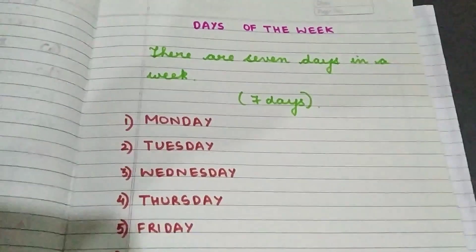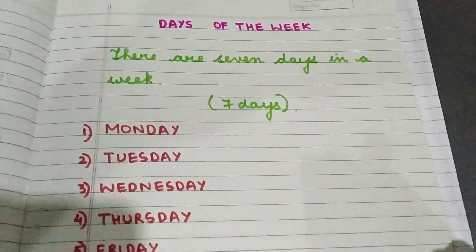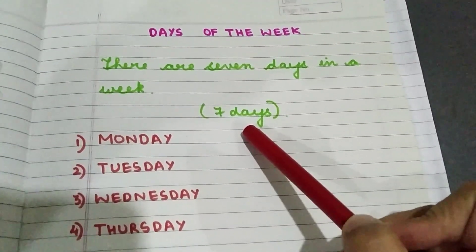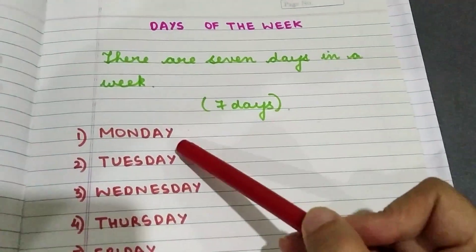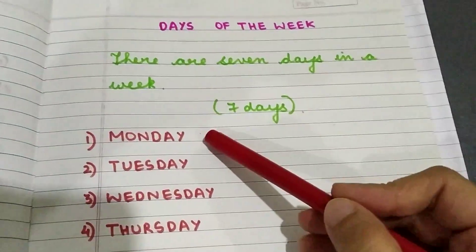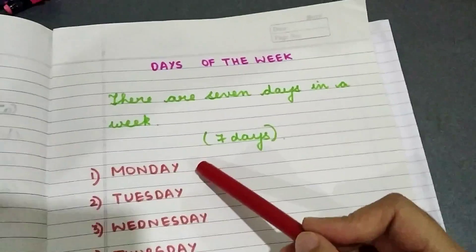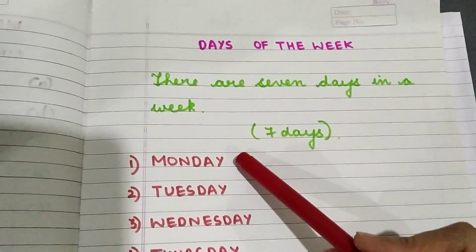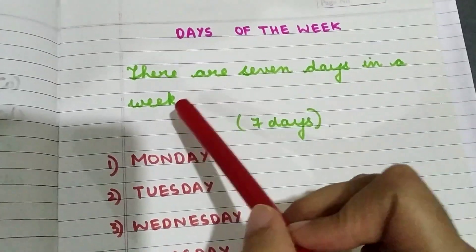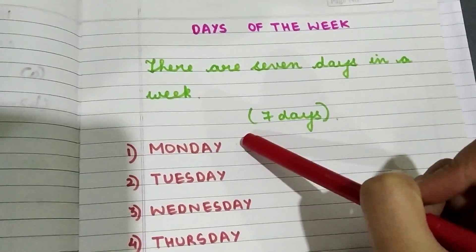So as you all know, a week comprises of how many days? A week has seven days and a week starts from Monday. Yes children, Monday is the first day of the week. I have written there are seven days in a week and the first day of the week is Monday.